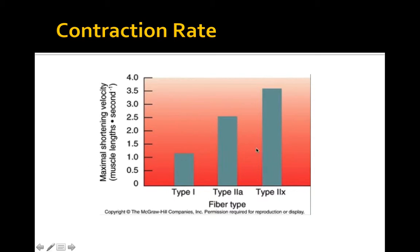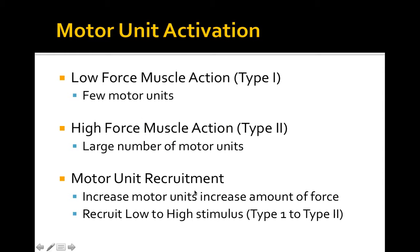If a muscle is never allowed to fully relax because of constant stimulation coming down the neuron, this increases the level of tension and the force of contraction. When comparing all three muscle types on a chart, the rate of contraction from type 1 slow twitch to type 2X is significantly different — type 1 reaches maximal shortening velocity at about 1.25, compared to type 2X at about 3.5. Type 2A, the hybrid, sits in between. Motor unit recruitment: increasing the number of motor units increases the amount of force produced.